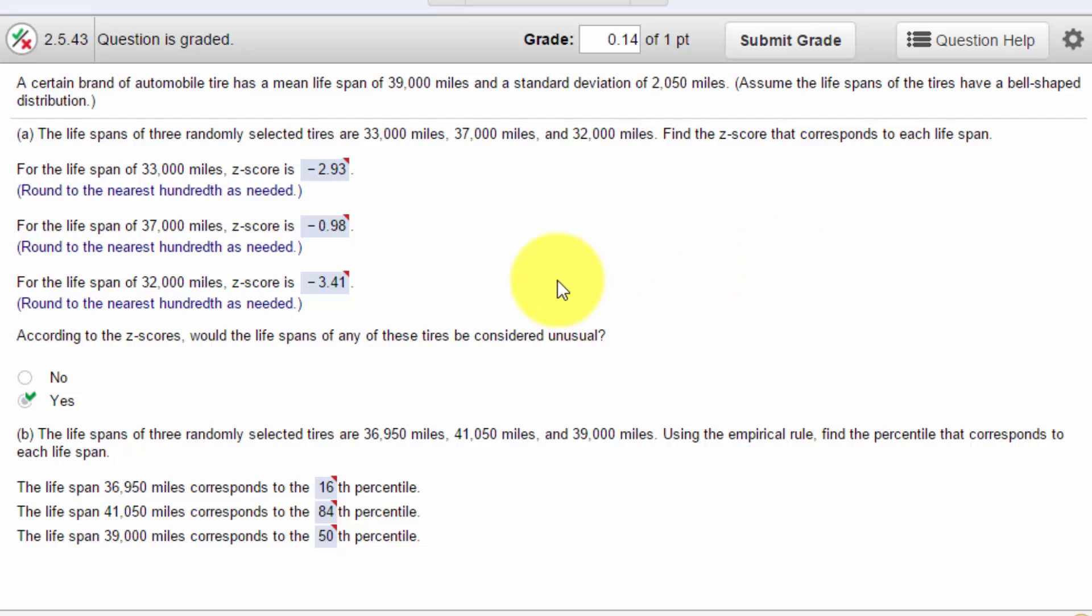This is a problem in which we're given information about a brand of automobile tire that has a mean lifespan of 39,000 miles, a standard deviation of 2,050, and we're told that we should assume the lifespans of the tires have a bell-shaped distribution.